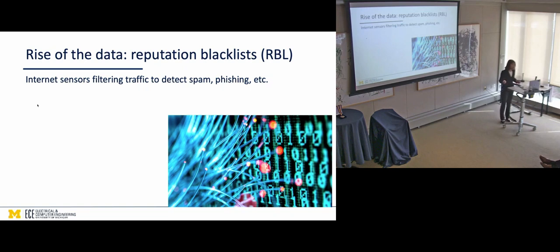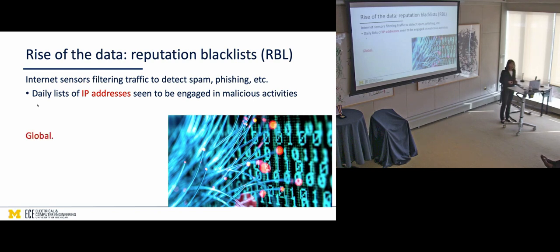Another example of the type of data that we have access to is what's called reputational blacklist RBLs. These are collected by internet sensors located all over the internet, filtering traffic to detect malicious activities like spam, phishing, et cetera. And what they come up with is these daily digest of IP addresses seem to be engaged in one of these malicious activities. Again, this type of data, if not particularly scalable, it does rely on this type of infrastructure. They are global. It covers the entire global internet. And they are explicit signs of botnet activity. Okay? If your computer is being used to send out spam, there's botnet infection. Now, botnet infection doesn't mean you are going to get your data stolen. So, there's still a bit of semi-causal, non-causal feature to this type of data. But it is a sign that something is not quite right.